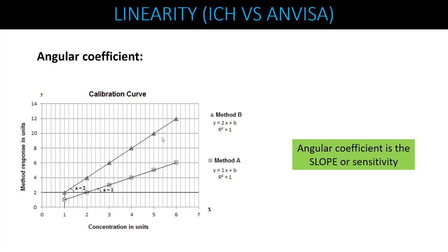Another important point ANVISA highlights is the angular coefficient, which is nothing but the slope or the sensitivity of the method — it indicates how the response increases with increasing concentration. On the plot, Method A has a slope of 1 while Method B has a slope of 2, so Method B is more sensitive than Method A. Based on the angular coefficient, you can easily compare the sensitivity of different methods.